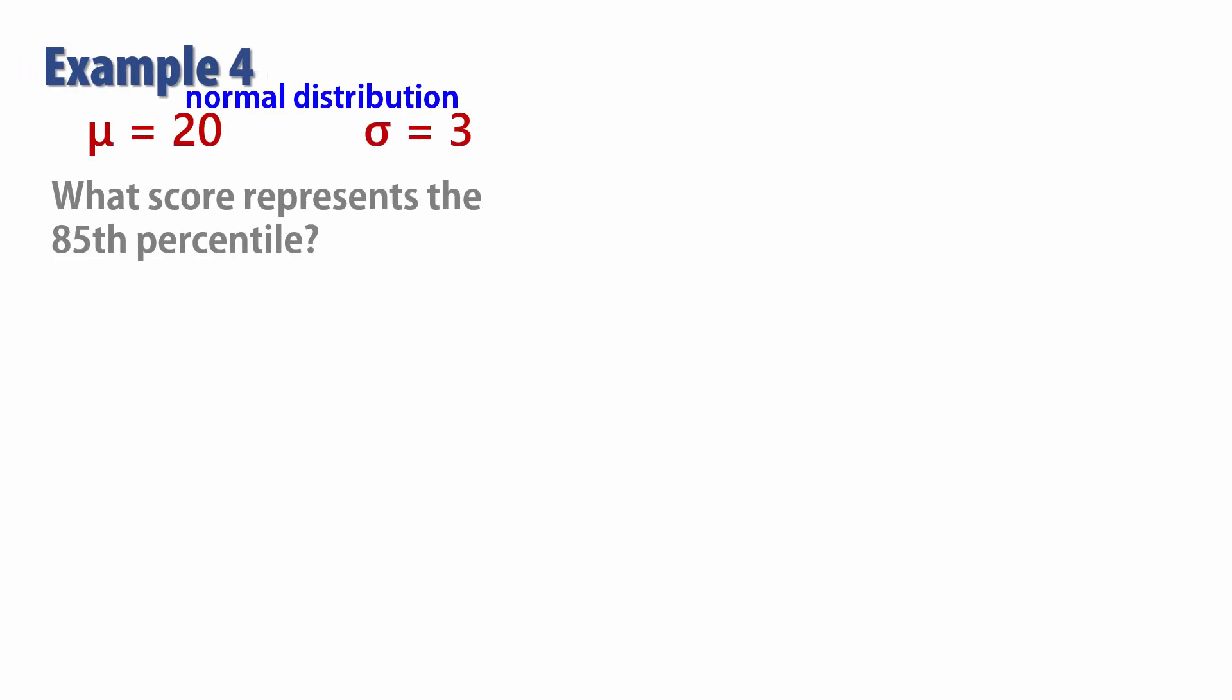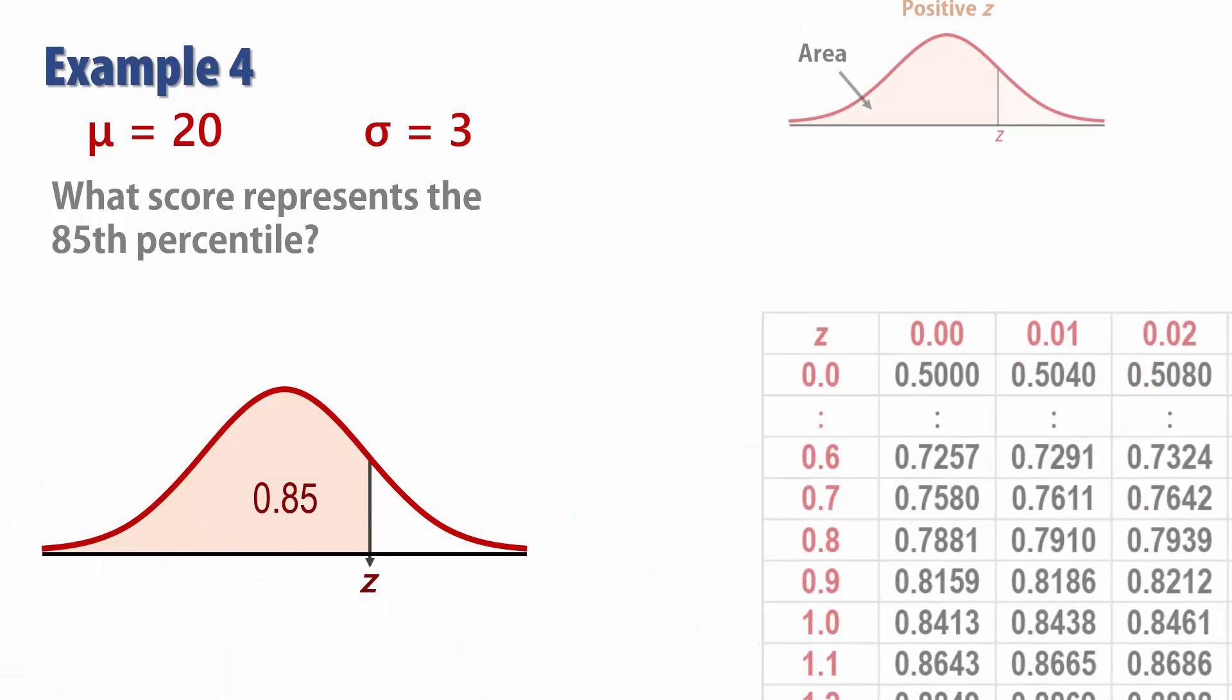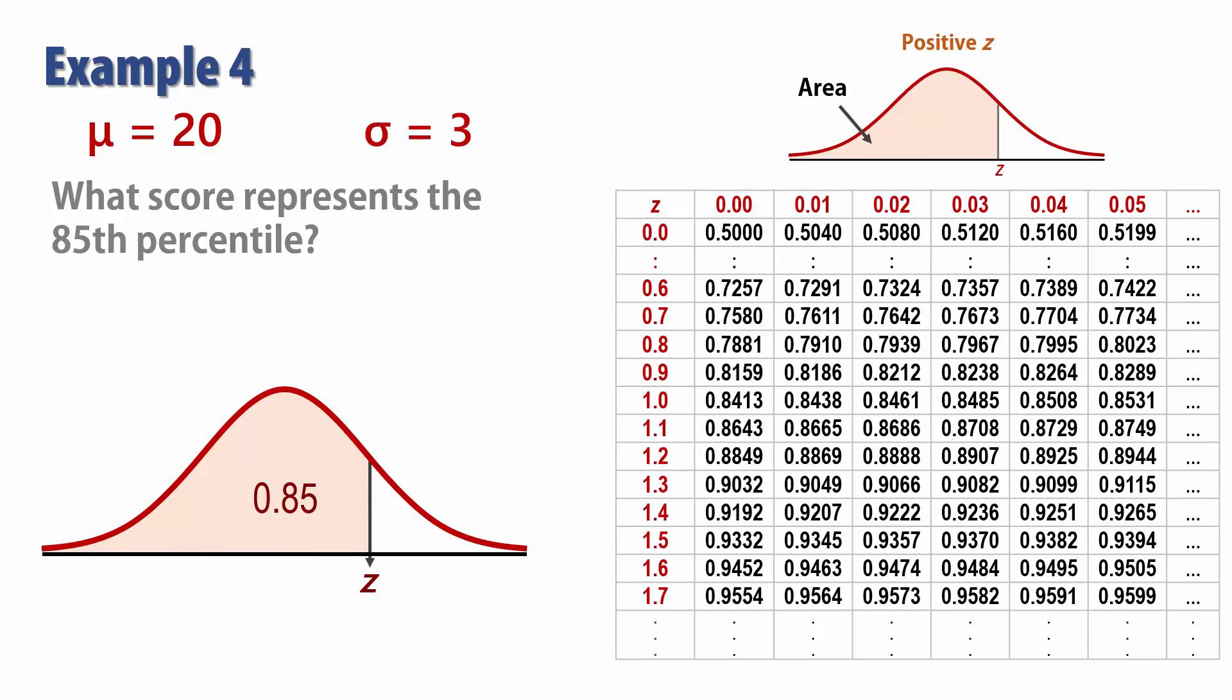Let's see the application in the following example. Suppose we have a normal distribution with a mean of 20 and a standard deviation of 3. We want to find the score that represents the 85th percentile. Since percentile means percent below, we first draw the standard normal curve and place 0.85 to the left of Z here.